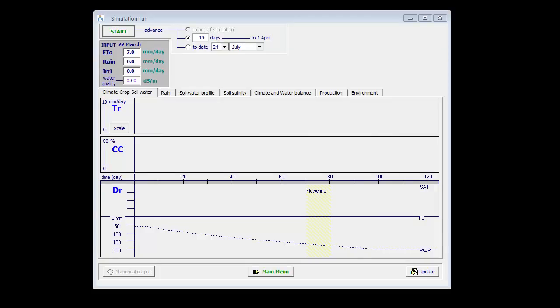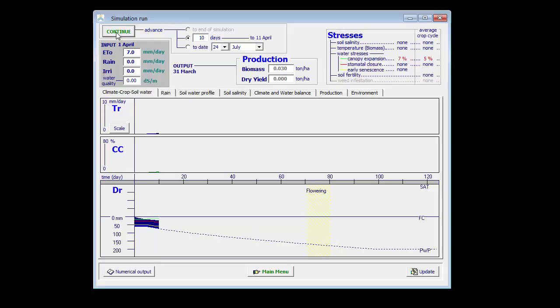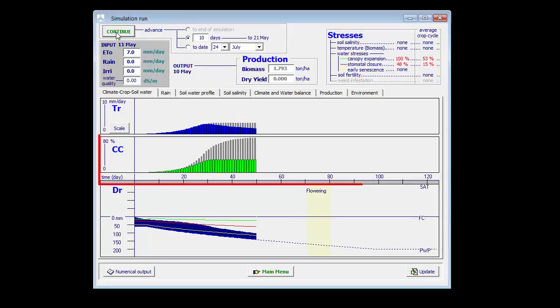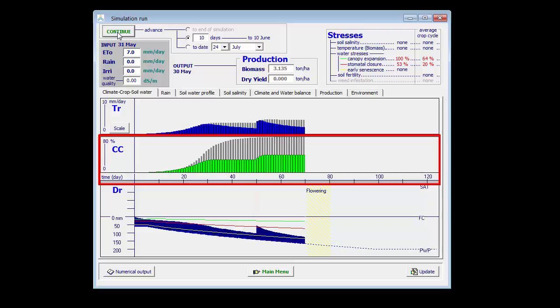Let's look at the canopy development for a determinate crop. So I start the simulation, but very quickly, due to water stress, the canopy development is limited and even stopped at day 30 of the season. Let's add some rainfall, 50 mm of rainfall, that will bring water in the root zone and result in a canopy increase.